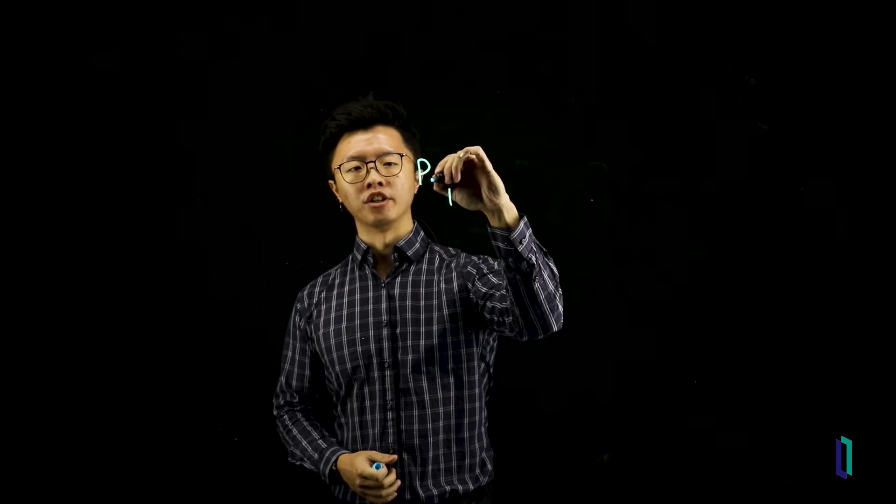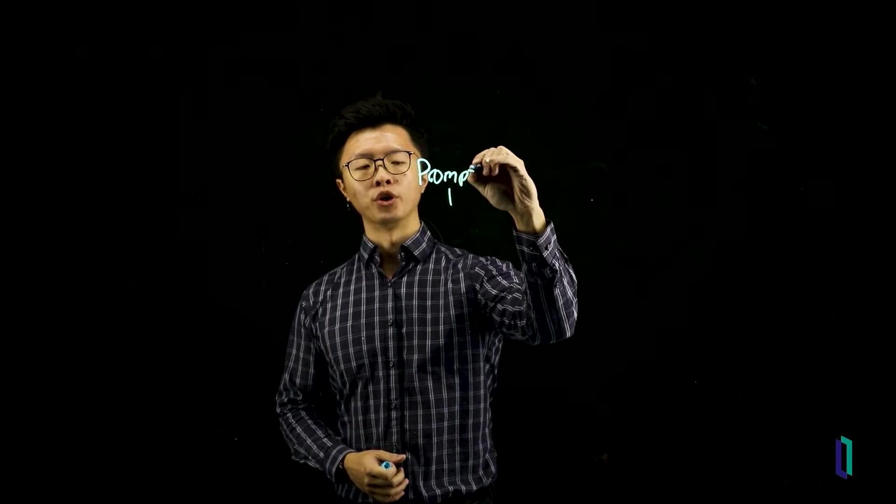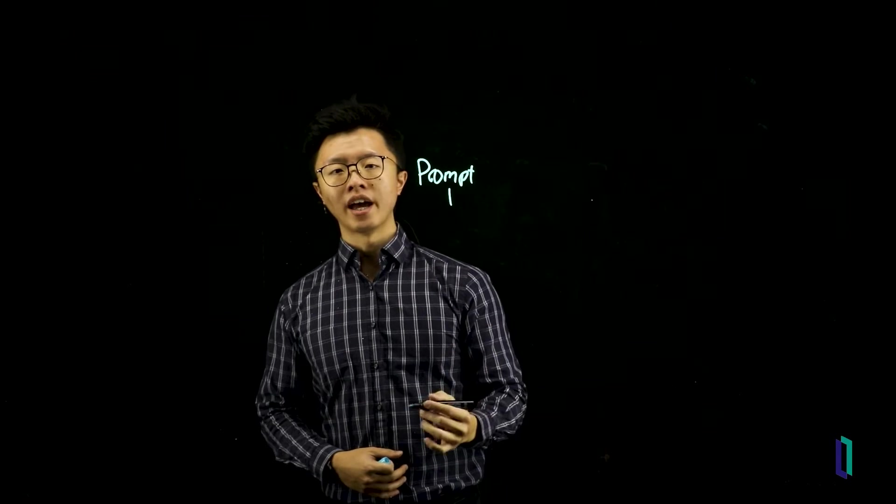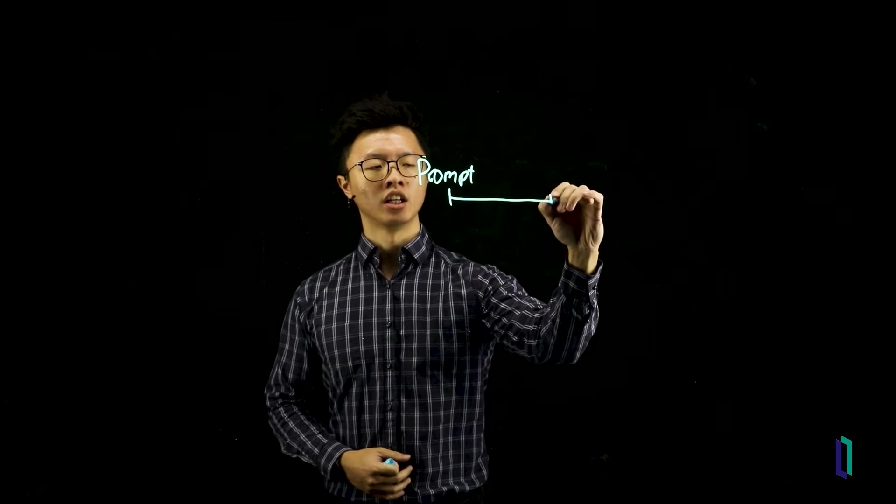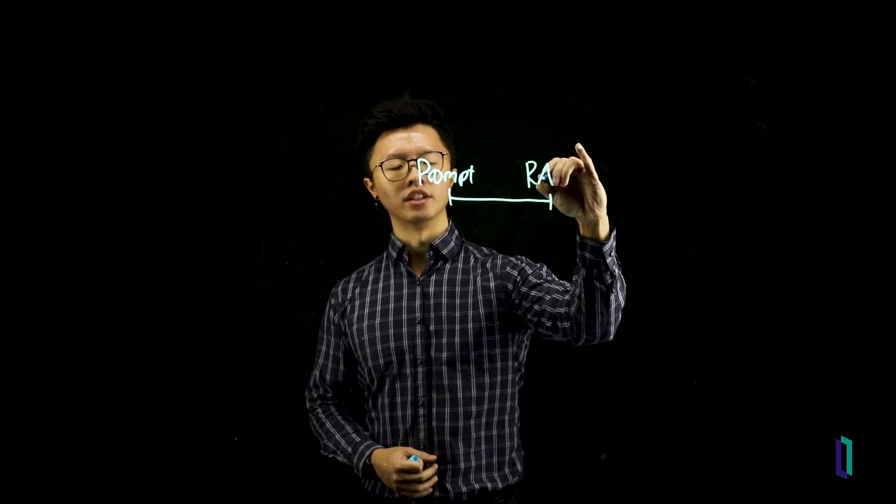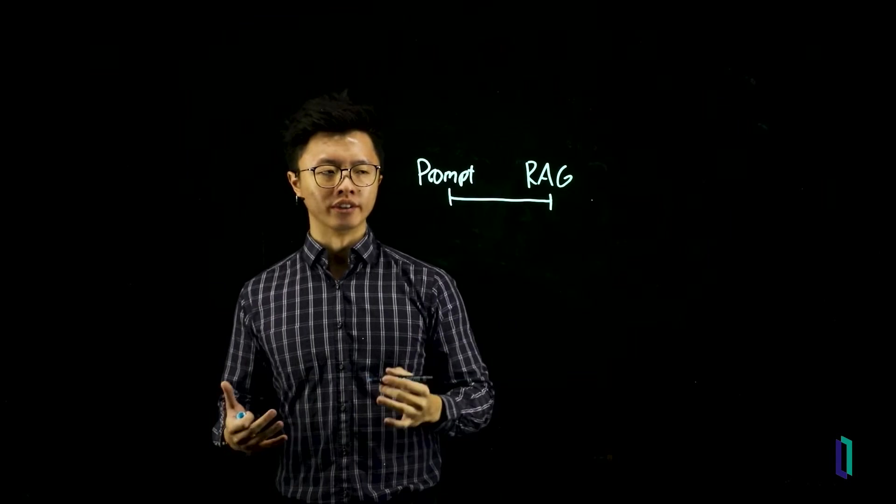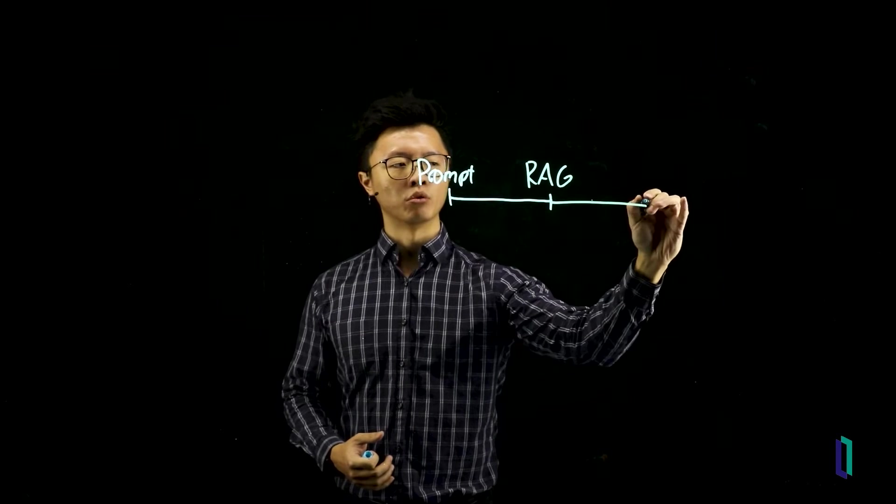First, you have prompt engineering, where you guide the large language model to do what you want it to do. If you add in the ability to search and retrieve data, you have your retrieval augmented generation. And if you're retraining your model on your own dataset, that would be fine-tuning.